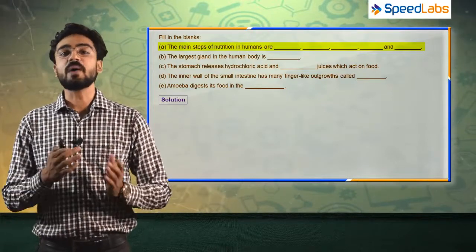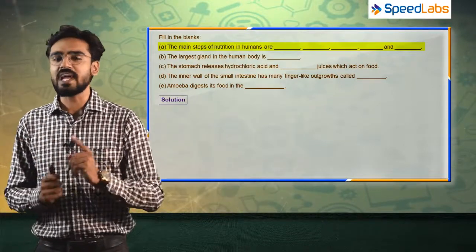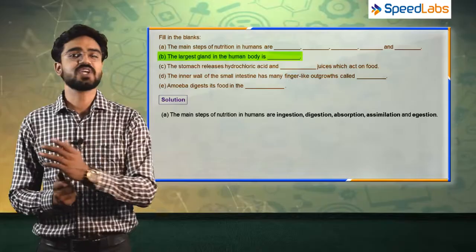So what are the steps through which we take nutrition in the human body? First, we will ingest the food. Secondly, we will digest the food. Thirdly, we will absorb the food — whatever vitamins and minerals are there, we absorb them. Fourthly, we will assimilate the food, and lastly the waste material is excreted. So the answers are: ingestion, digestion, absorption, assimilation, and lastly egestion.